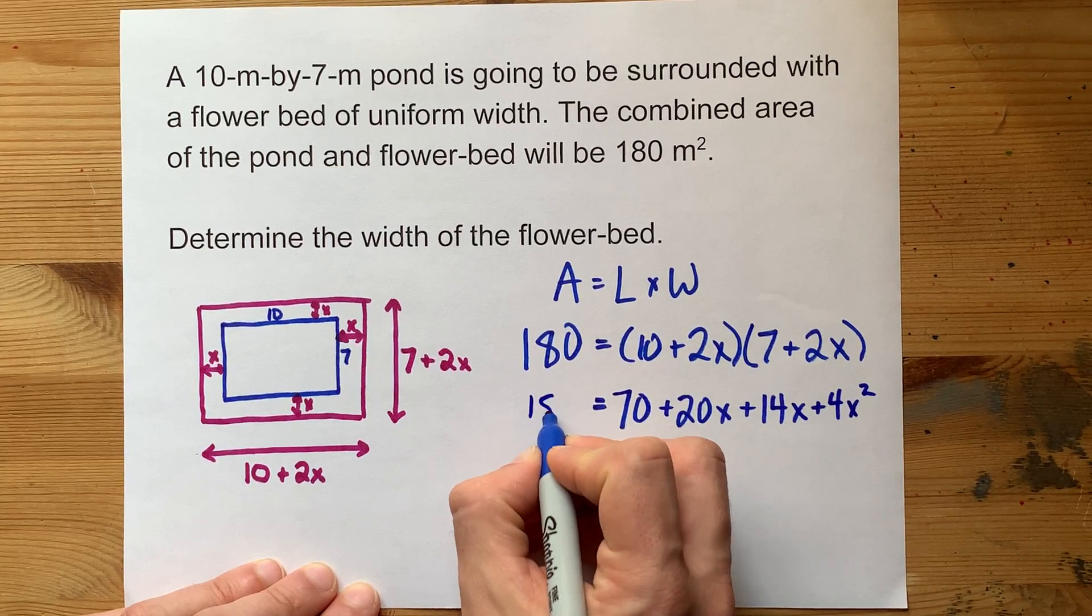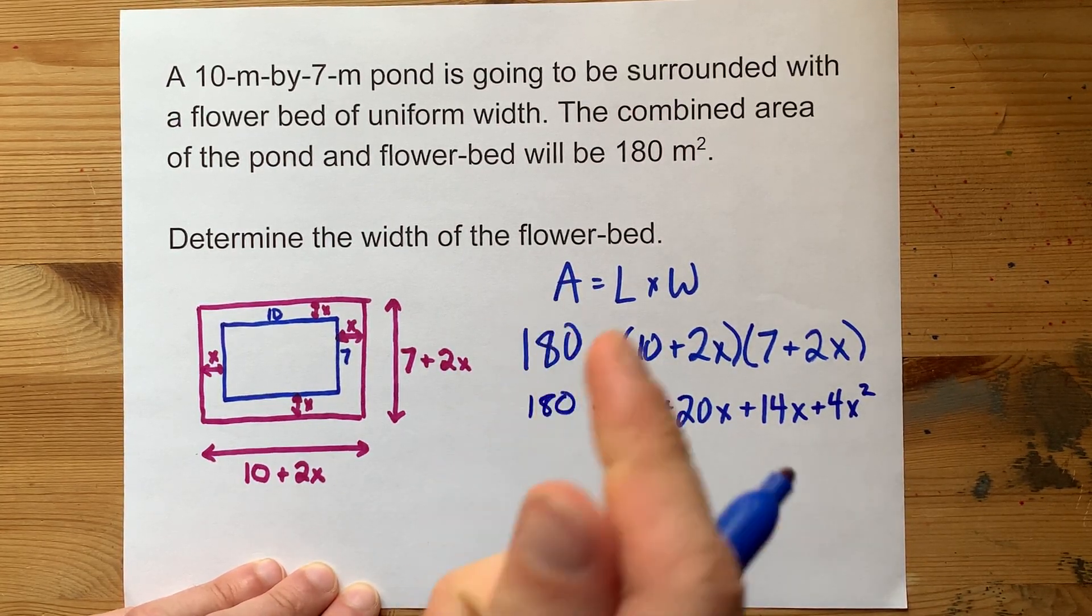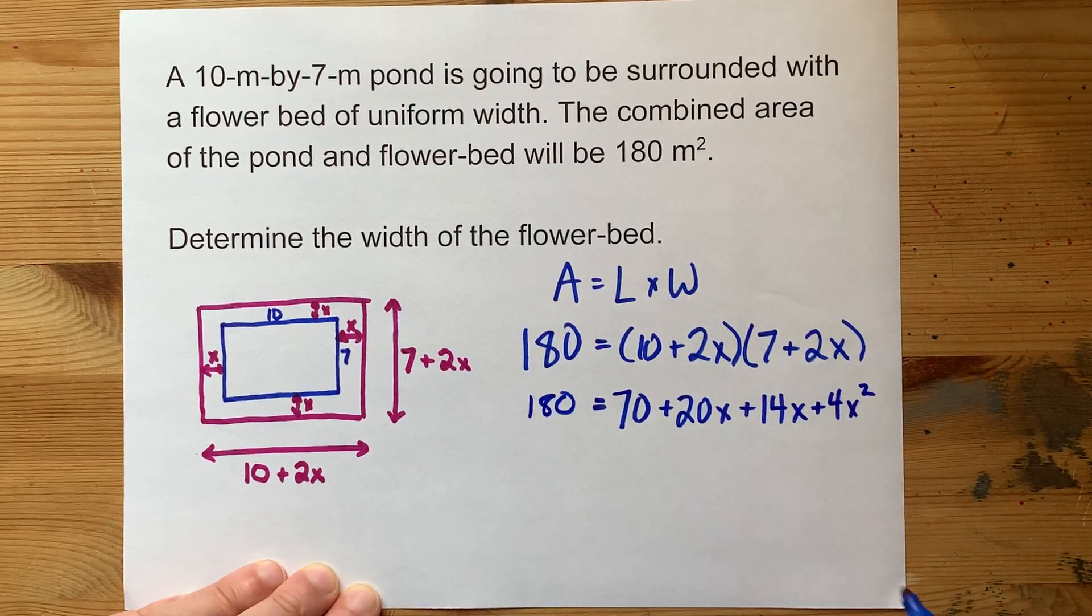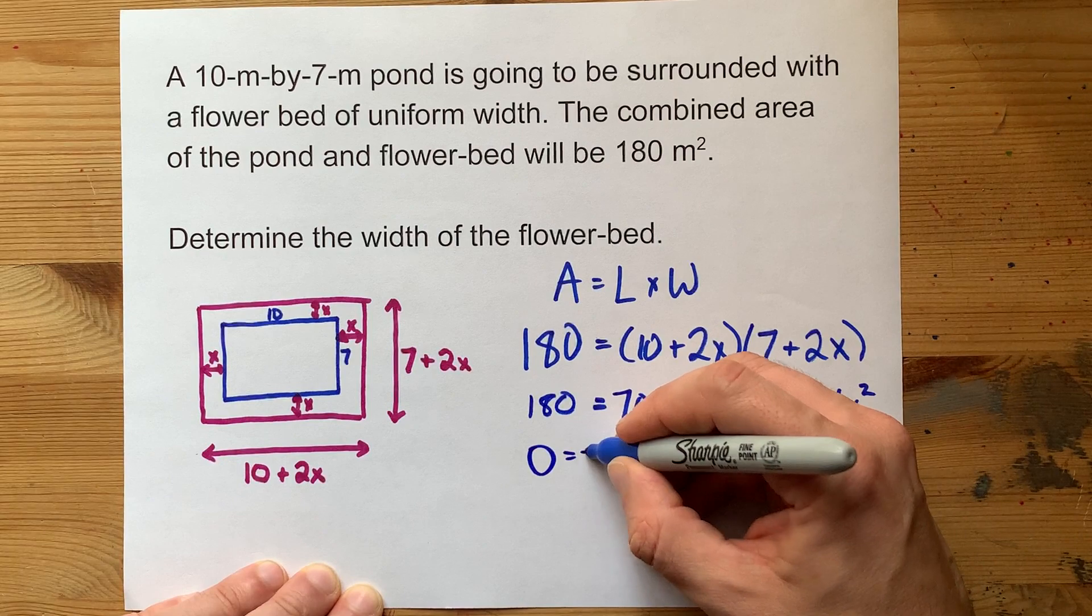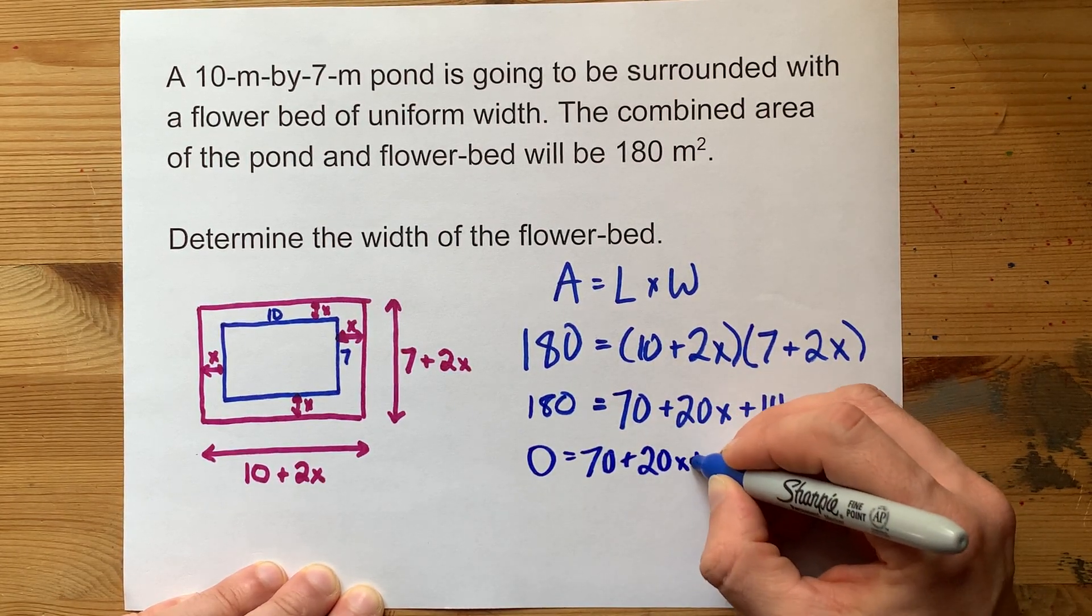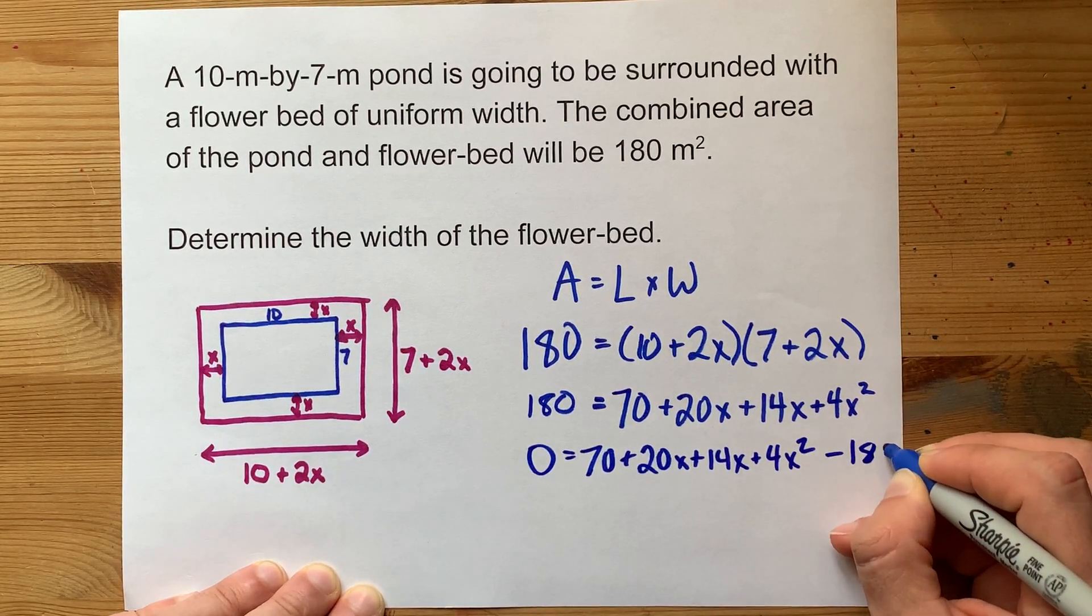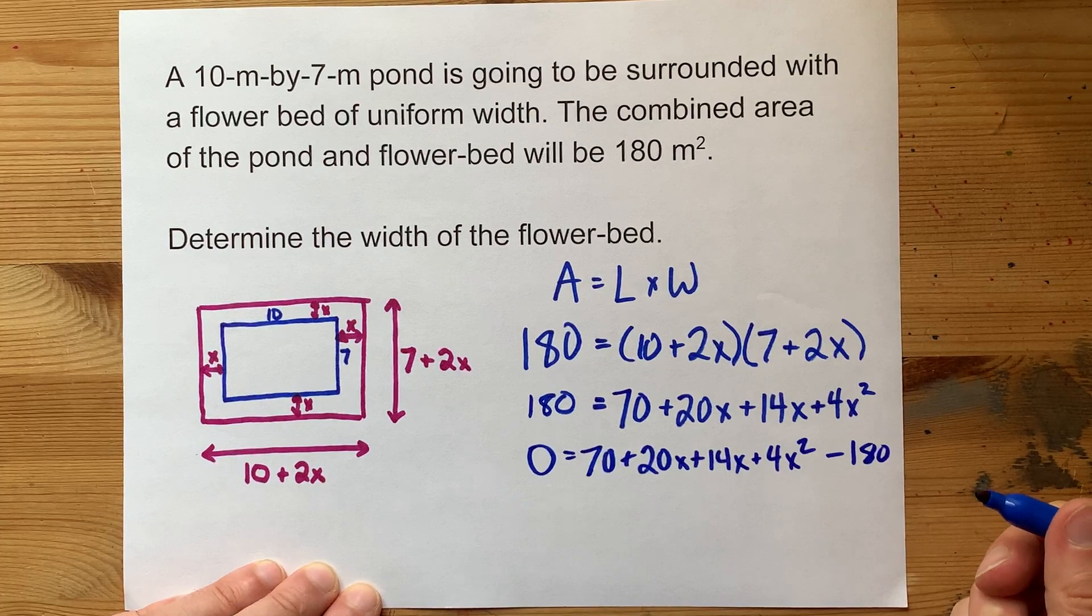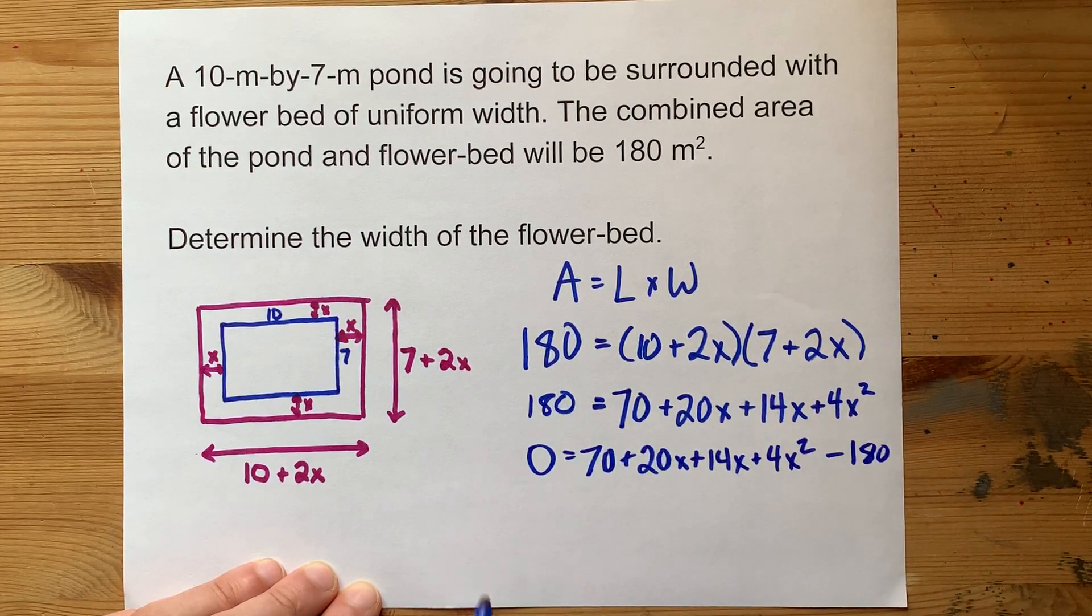Now that still equals 180, but ideally, to solve a quadratic equation, we want one side to be zero. So I'm going to move 180 to the other side. I still have my 70 plus 20X plus 14X plus 4X squared, but I'm taking away 180 on the other side. I can collect like terms.